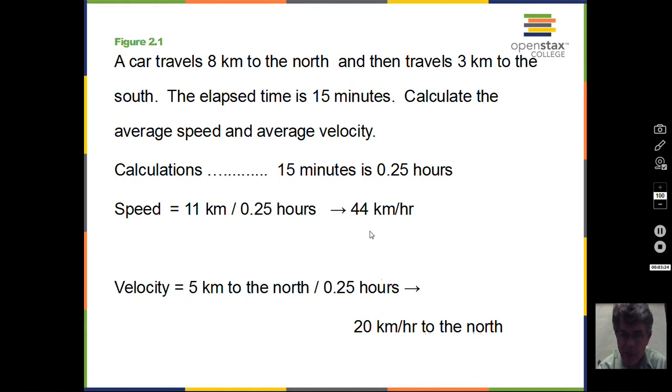Notice that the speed is typically going to be a larger number than the velocity. Unless we're traveling on a perfectly straight line with no retreat, no coming back, reversing direction, the speed will be greater than the velocity. If we're moving in a straight line and not retracing our motion, then the speed and the velocity can be the same number. But the velocity will still have a direction attached that the speed won't.